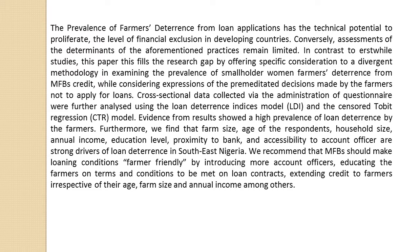Evidence from results showed a high prevalence of loan deterrence by the farmers. Furthermore, we find that farm size, age of the respondents, household size, annual income, education level, proximity to bank, and accessibility to account officer are strong drivers of loan deterrence in southeast Nigeria.